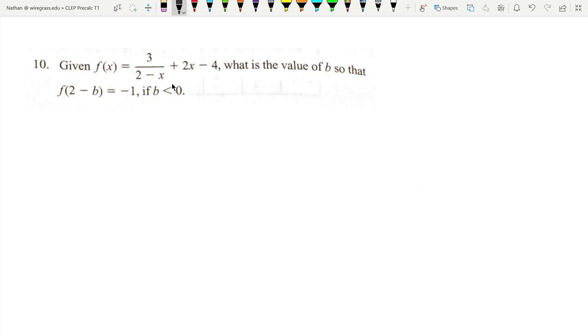Given this rational function, we need to find a value of b so that f of 2 minus b equals negative 1 and b is less than 0.